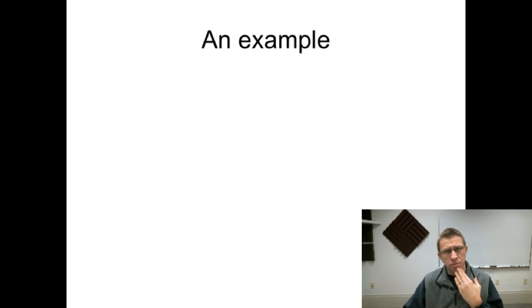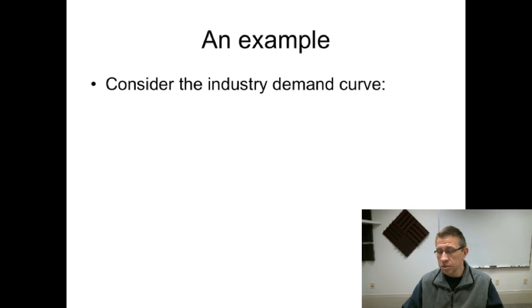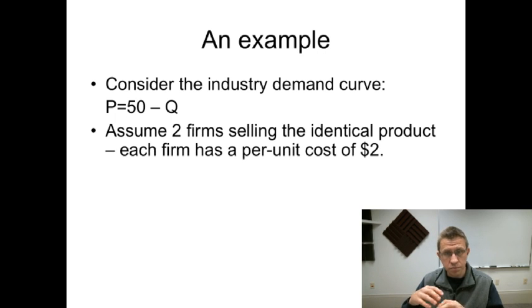On both Cournot and Bertrand, we'll go through several examples. I think these are relatively straightforward but much easier once you see how the example works. We have an industry demand curve: price equals 50 minus the quantity. This is for the entire industry—there's two firms in the industry. The cost that each firm has for the product is $2 per unit. They're selling this identical product.